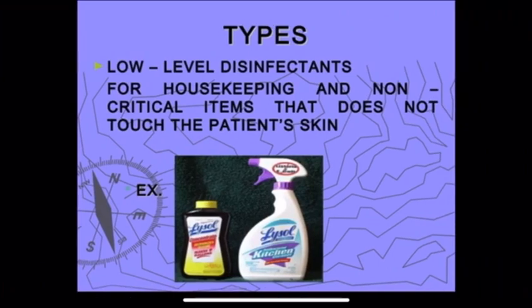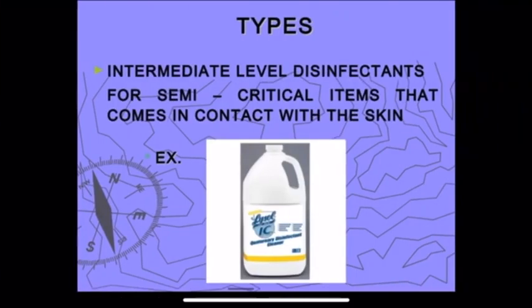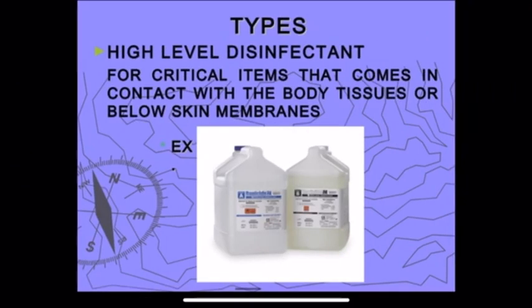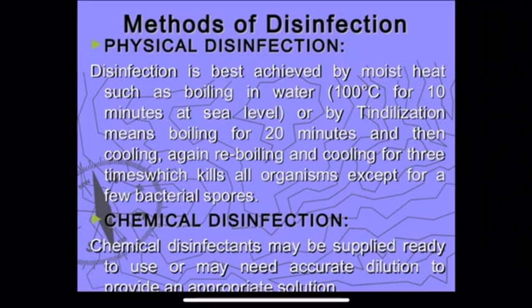Types of disinfectants: low level disinfectants are used for housekeeping and non-critical items that do not touch the patient's skin — for example, Lysol, used for floor cleaning. Intermediate level disinfectants are used for semi-critical items in contact with skin. High level disinfectants are used for critical items in contact with body tissues and below skin membranes.